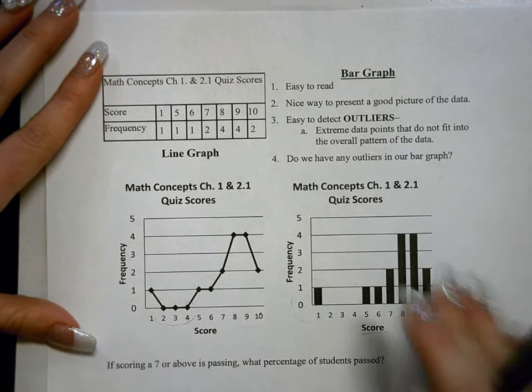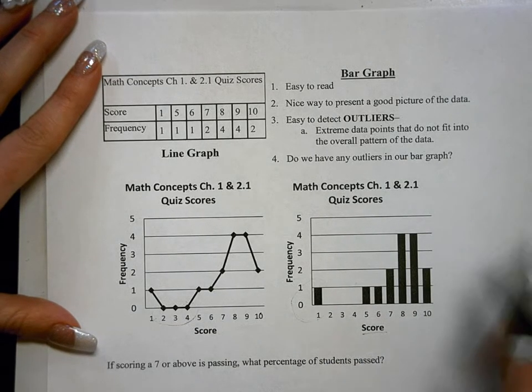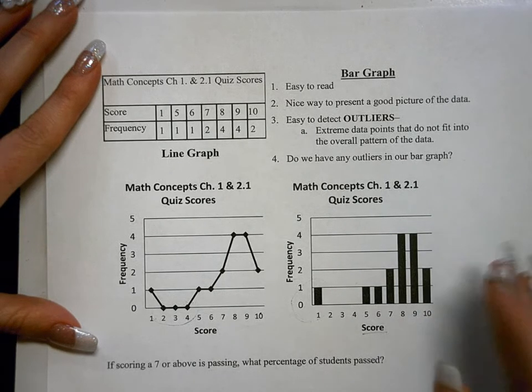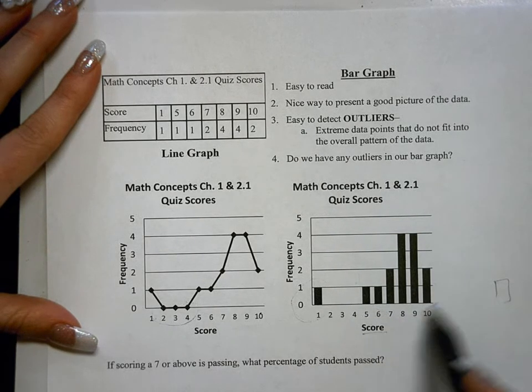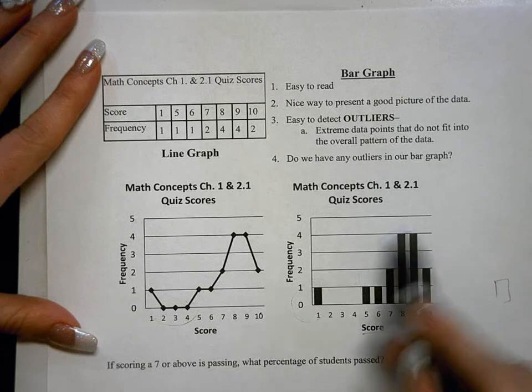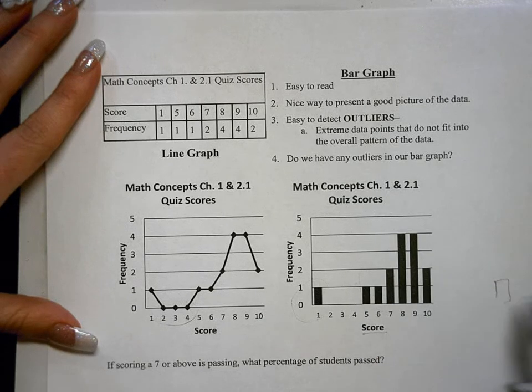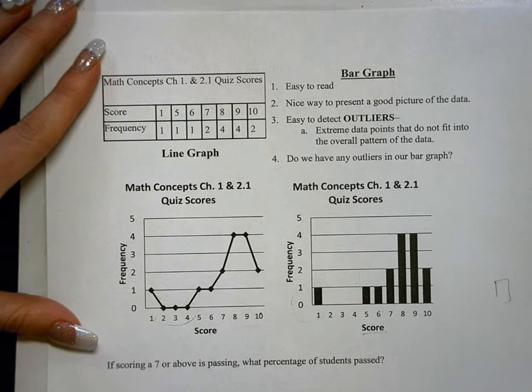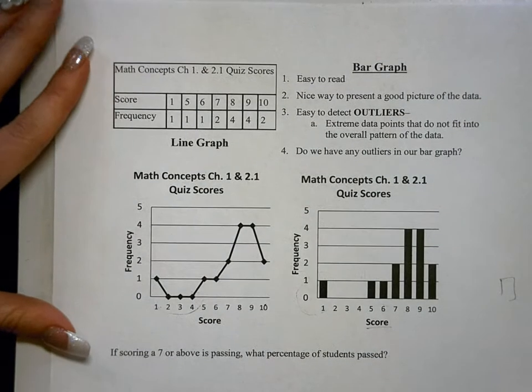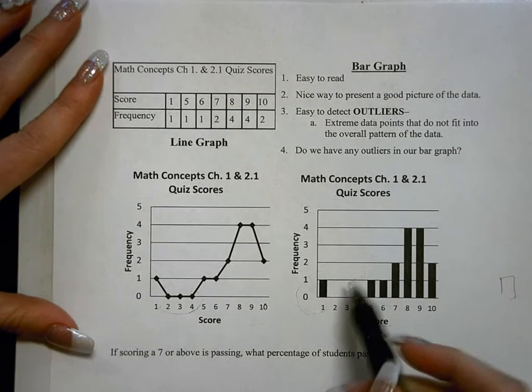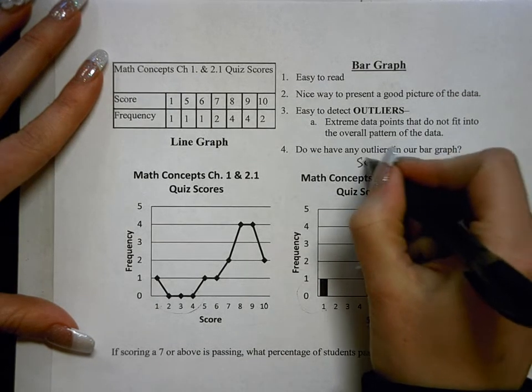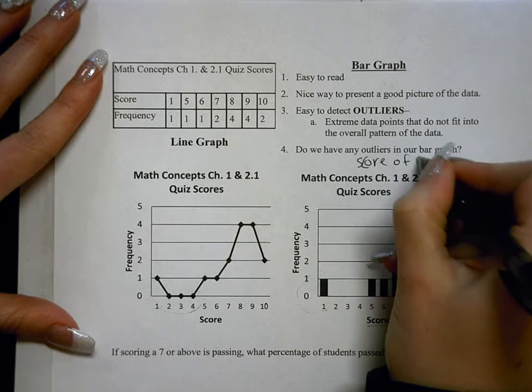Also, outliers can be on the other end. So let's say there was some column out here and it was far away from the regular overall pattern of the data, this would be an outlier as well. So those are called extreme data points, which are also known as outliers. So yes, in this bar graph, do we have any outliers in our bar graph? Yes, we have the score of 1. Score of 1. That would be an outlier.